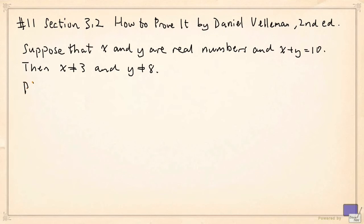But let's look at the so-called proof. It is a proof by contradiction. So the way it starts is, suppose that the conclusion is false. So we are assuming that this is not true. Then what must happen is x is 3 and y is 8.